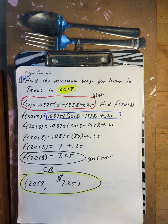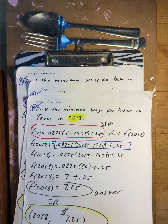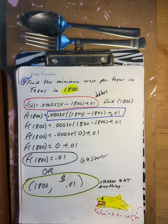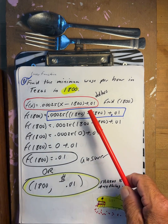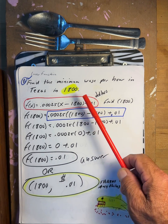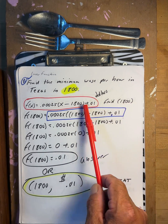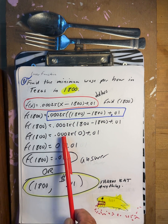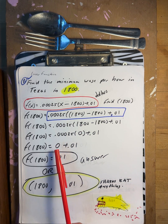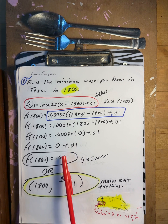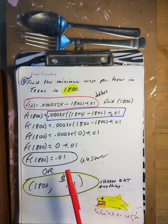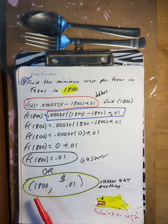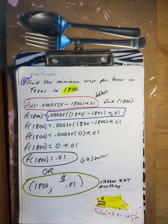Find the minimum wage per hour in Texas in 1800. f of 1800: 1800 minus 1800 is 0, 0 times the coefficient is 0, plus 0.01 is 0.01. So in 1800, you got one cent — one penny — every hour you worked.